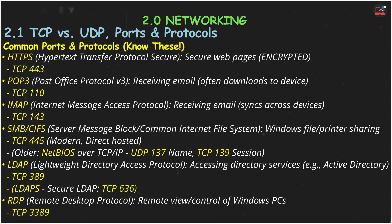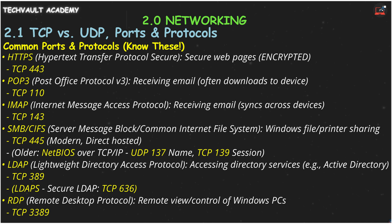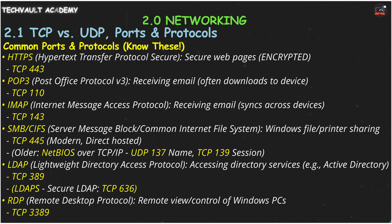For file sharing and printer access, especially in Windows environments, you'll encounter SMB, or Server Message Block — also known as CIFS. Modern Windows systems use TCP port 445 for direct-hosted SMB. Older NetBIOS over TCP/IP used UDP port 137 for name services and TCP port 139 for session services, but TCP 445 is key for current SMB. For directory services like querying Microsoft Active Directory, we use LDAP, or Lightweight Directory Access Protocol, on TCP port 389. Its secure version, LDAPS, uses TCP port 636.